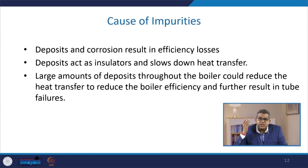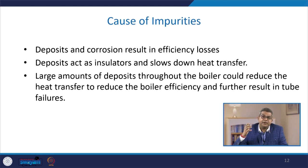There are various causes of impurities. Deposits and corrosion result in efficiency losses; deposits act as insulators and slow down heat transfer, ultimately reducing the energy efficiency and performance of the boiler. Large amounts of deposits throughout the boiler could reduce heat transfer, reduce boiler efficiency, and result in tube failure. Tube failures have two effects: the efficiency and performance of the boiler go down, and the boiler may create a safety hazard.